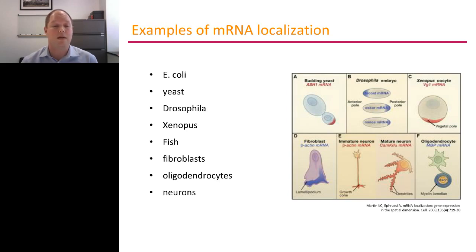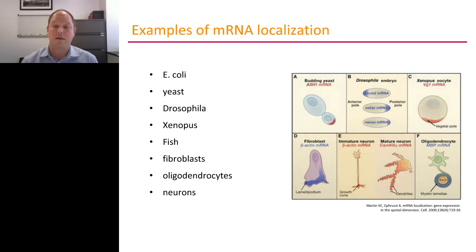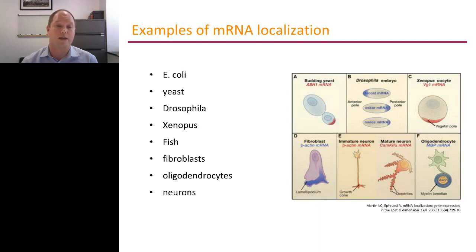Fairly recently, work has found that, for example, lamellipodia of fibroblasts are enriched in a specific subset of mRNAs that are anchored to the tips of microtubules. The focus of the talk today is mRNA localization in neurons, mainly developing neurons, but also briefly adult neurons. And just for completeness, other cells in the nervous system such as oligodendrocytes also contain extensive mRNA localization.